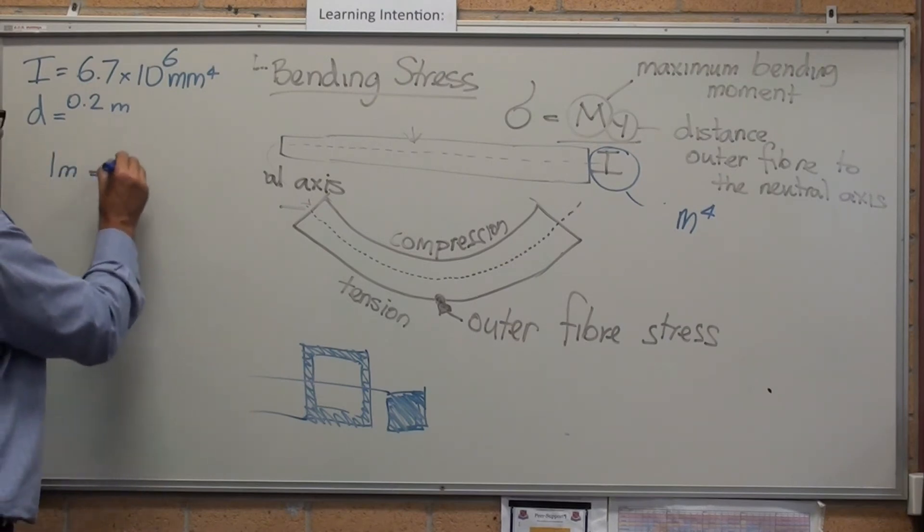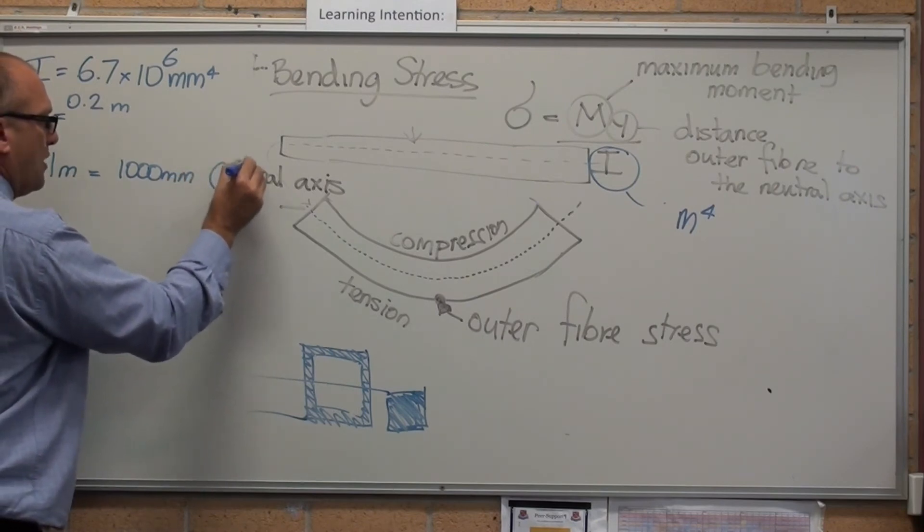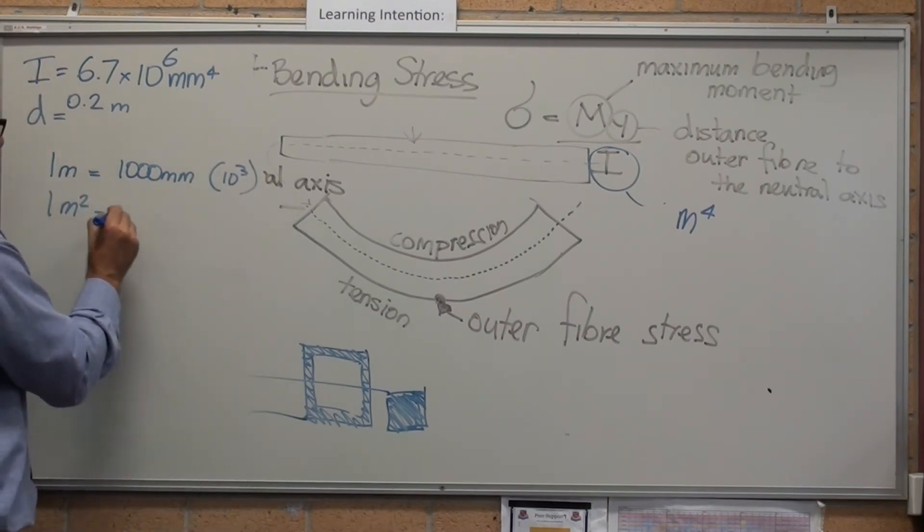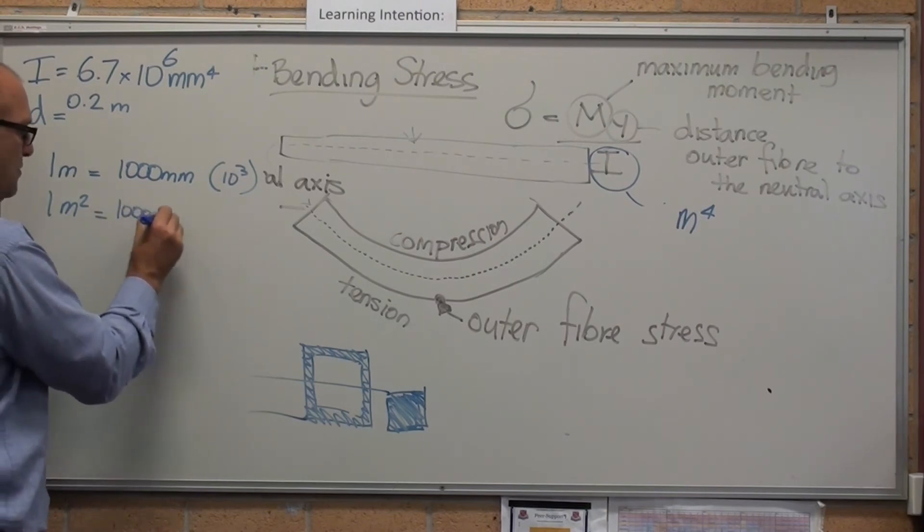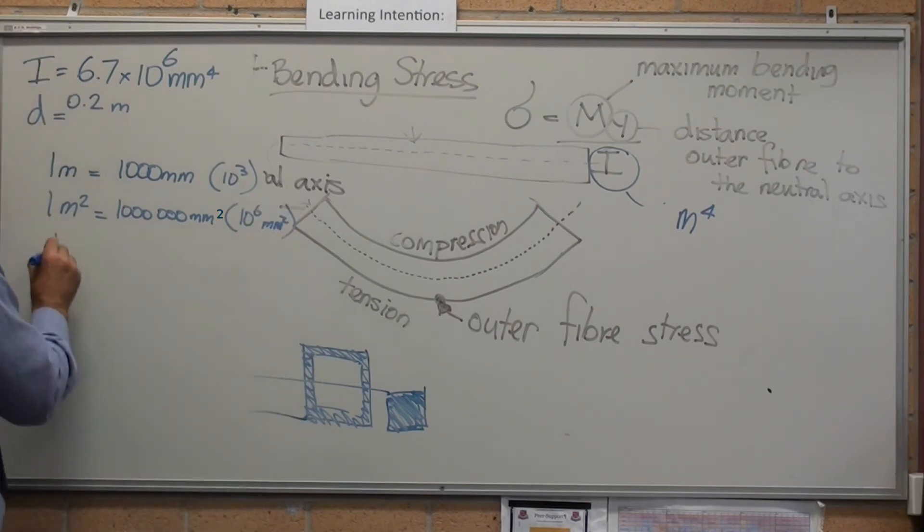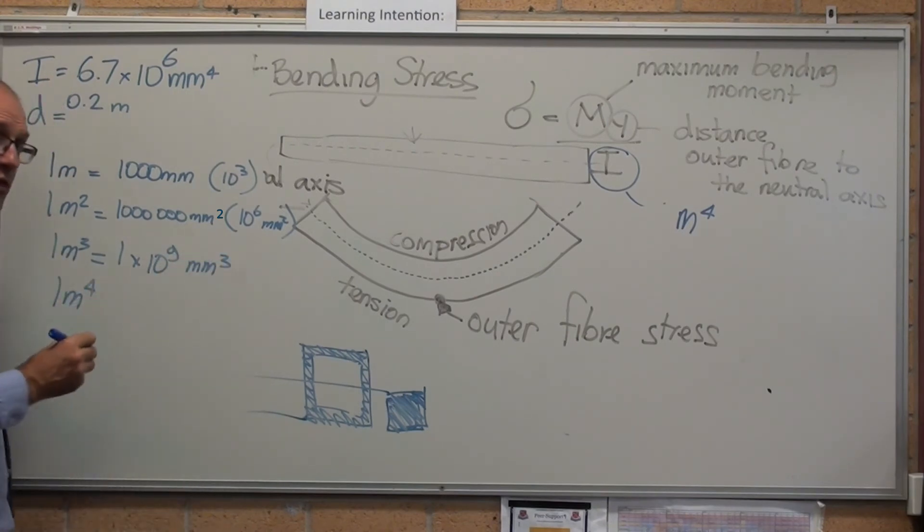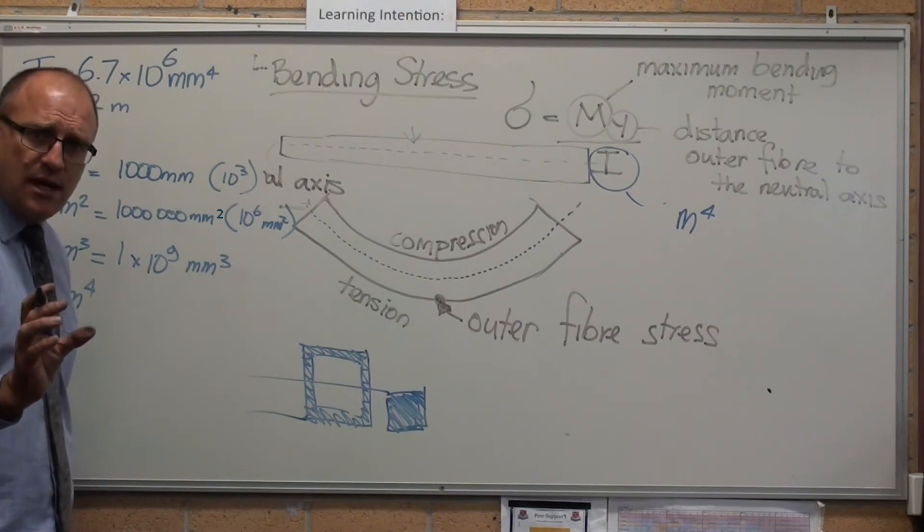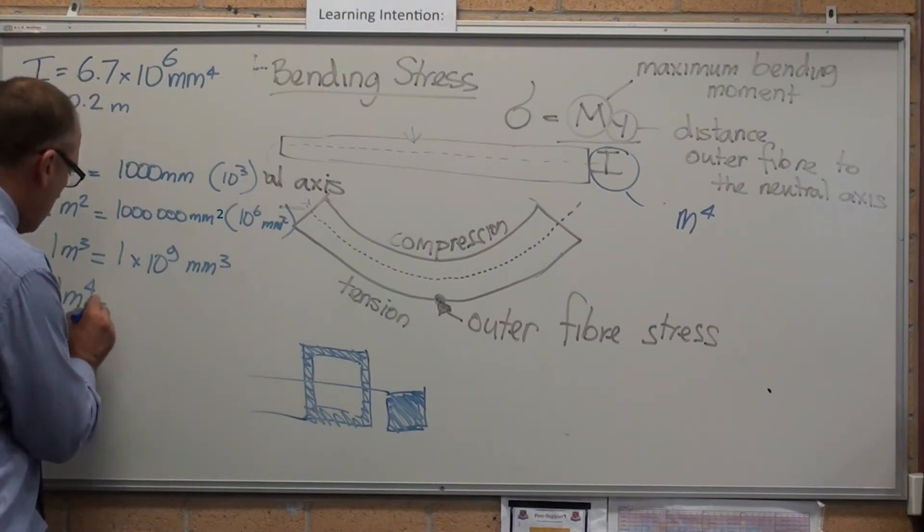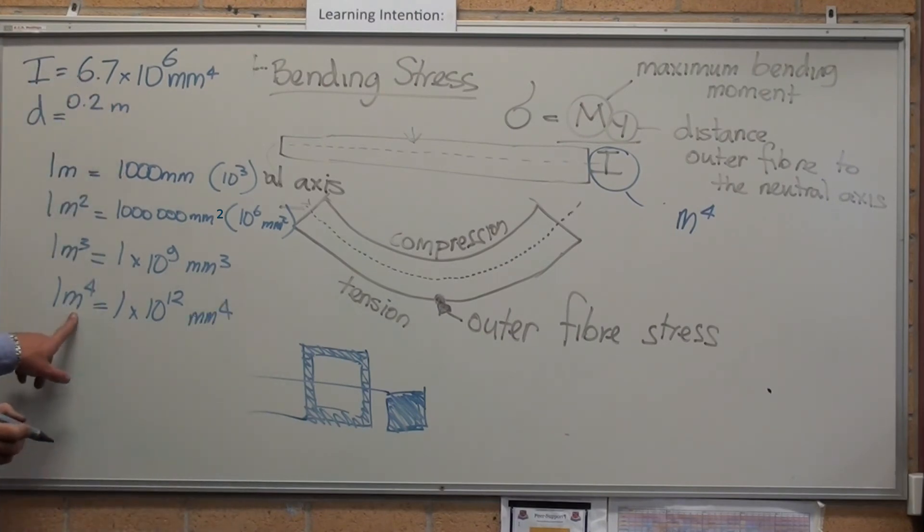1 metre equals 1000 millimetres, 10 to the 3. 1 metre squared equals... 1 metre cubed equals... 1 metre to the fourth is 10 to the 12 millimetres to the fourth.